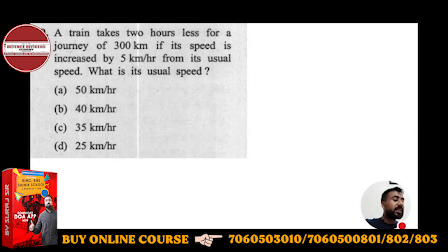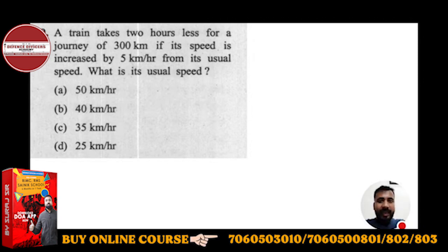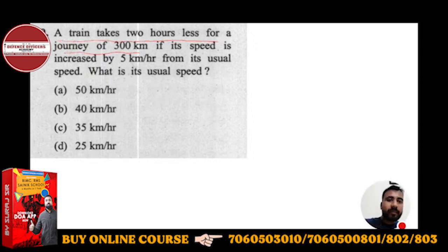This is the next question. We can solve it by options. A train takes two hours less for a journey of 300 km if its speed is increased by 5 km per hour from its usual speed. Then what is the usual speed? This question is important.